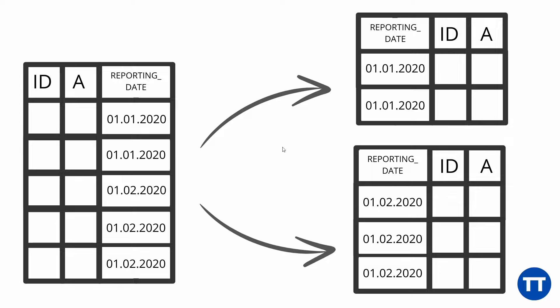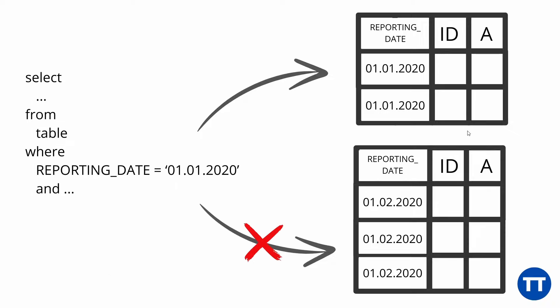So we are putting the records with the 1st of February up here and the records from the 1st of January down here. Once again — 1st of January in one partition, 1st of February in another. If we run a query on this, the database will automatically know which partition to target.